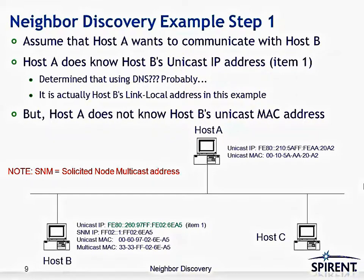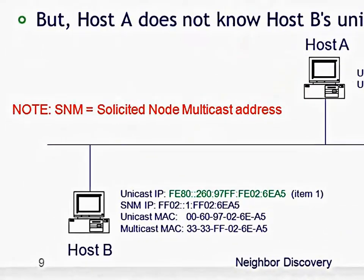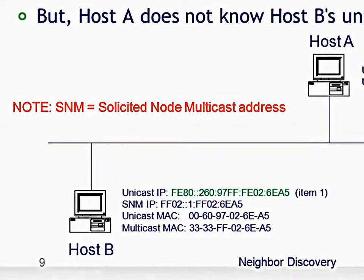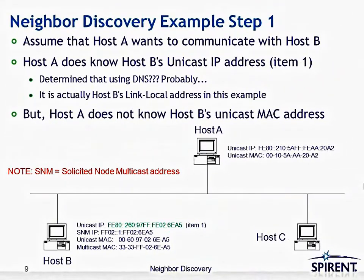Step one: assume host A wants to communicate with host B. How does host A know host B's unicast address? Host A knows host B's unicast IP address — most likely determined using DNS (Domain Name Service). In this example it's host B's link-local address, but it could be any globally unique address assigned to host B. The problem is, host A does not know host B's unicast MAC address, so it doesn't know a MAC address to which to send messages.